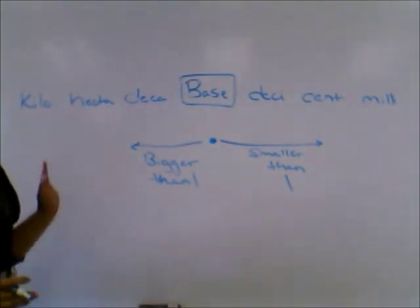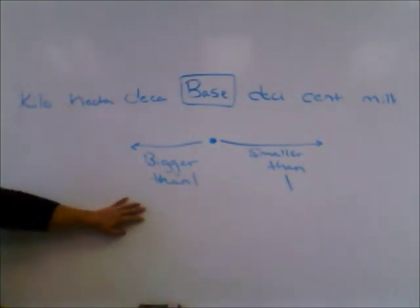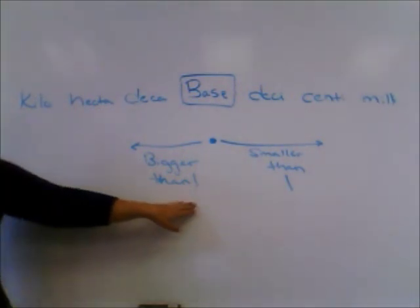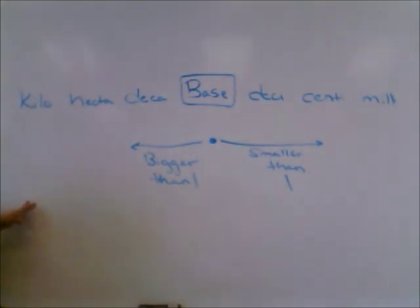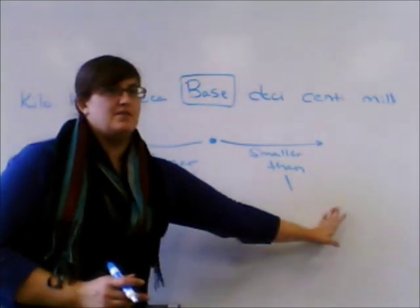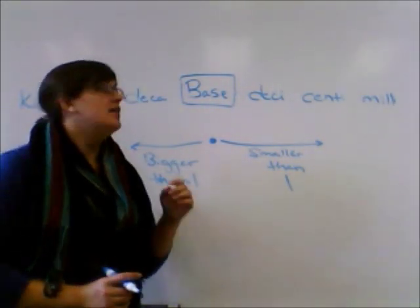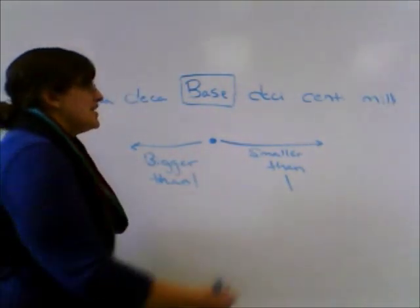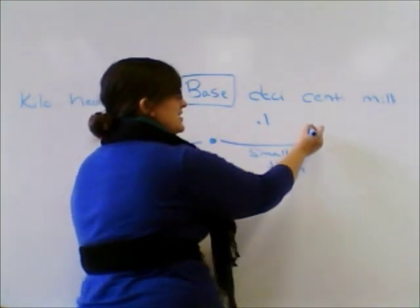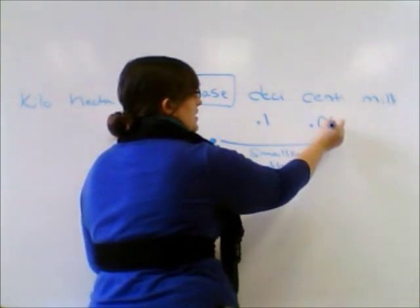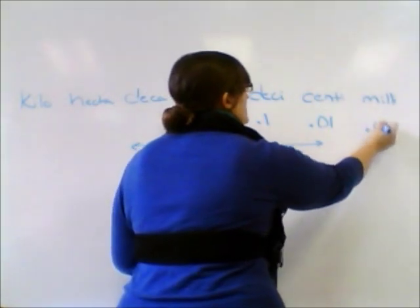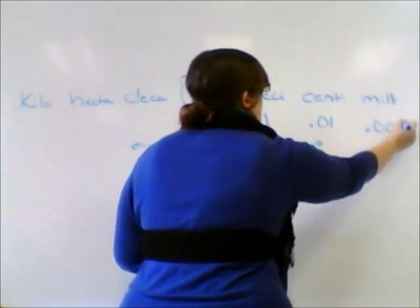So you start in your middle — the base is our decimal point. Everything to the left of the base is bigger than one, everything to the right is smaller than one. So deci is like saying point one, centi is like saying point zero one, and milli is like saying point zero zero one.